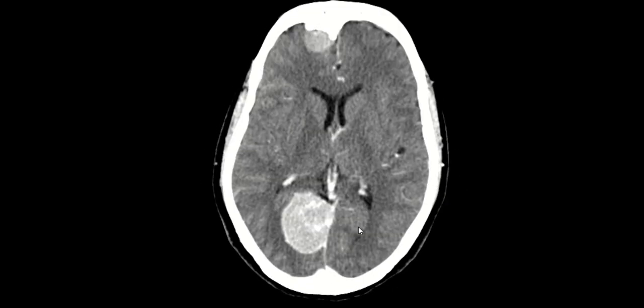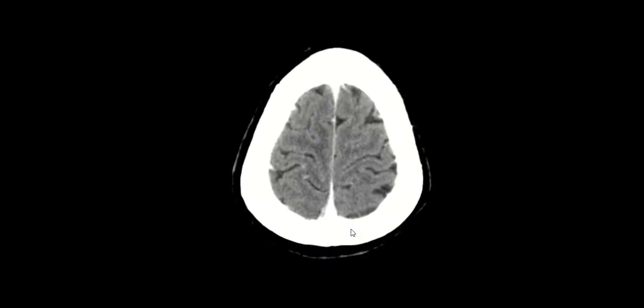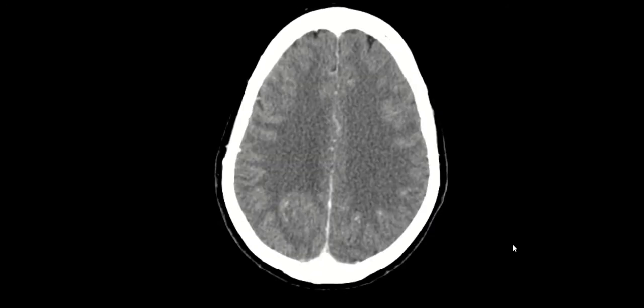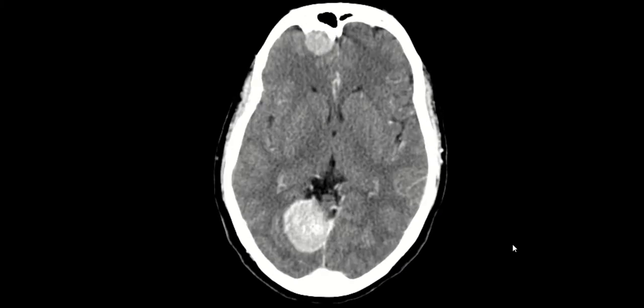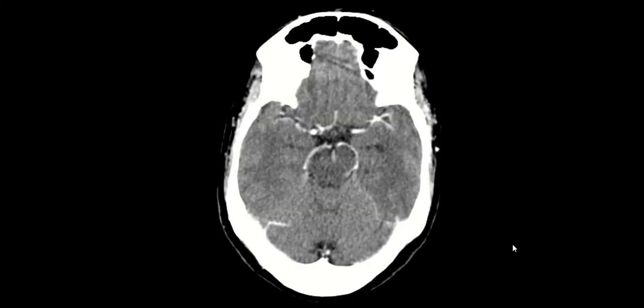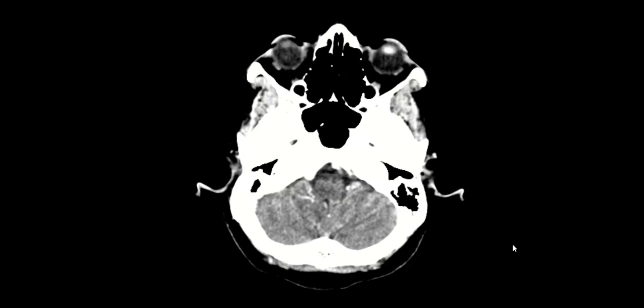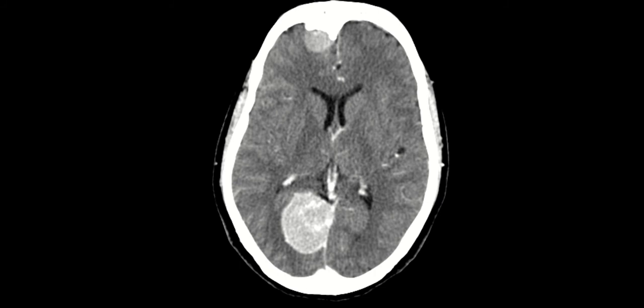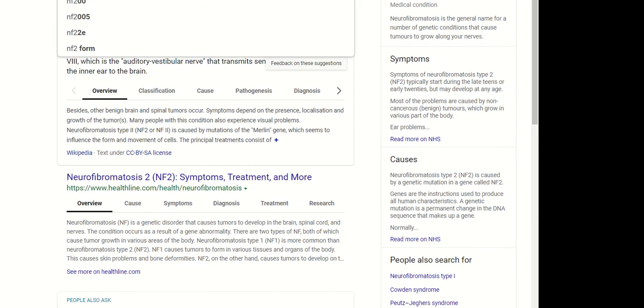It's hyper-enhancing because it's extra-axial and outside the blood-brain barrier. Contrast would hypothetically be useful to detect smaller meningiomas — to rule out meningiomatosis, for example in NF2 — just meningiomatosis.